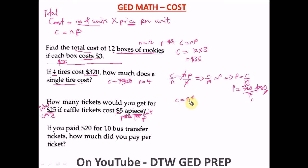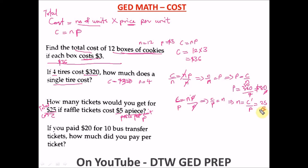To find N, we make N the subject of the formula. Dividing both sides by P gives us N equals C over P. Substituting: C is 25 dollars and P is 5 dollars, so N equals 25 divided by 5, which equals 5. Note that N does not carry a dollar sign since we are counting units — the answer is 5 tickets.